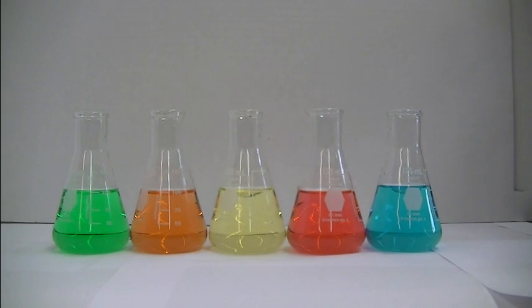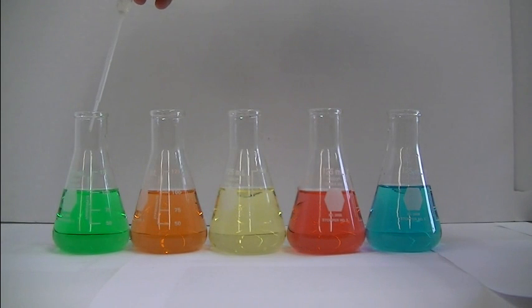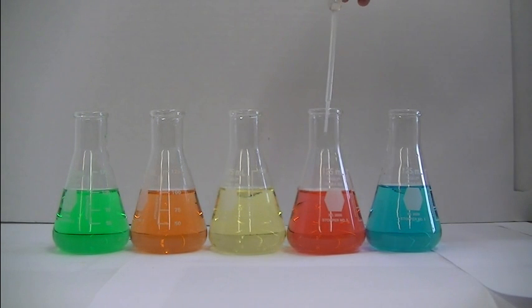Here's a simple experiment using food dyes and bleach. I'm going to add two drops of bleach to each of these solutions of dye and then I'm going to swirl the contents of each flask.